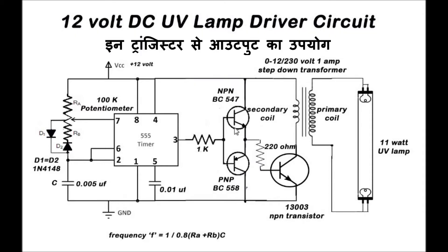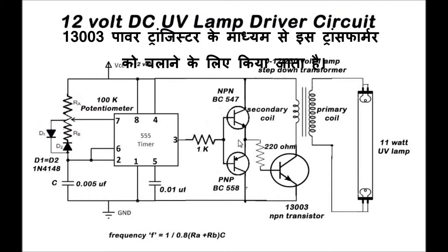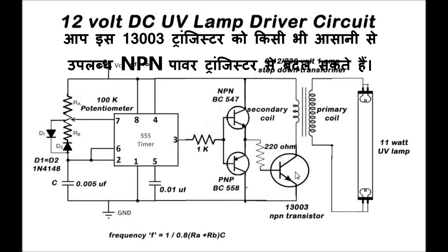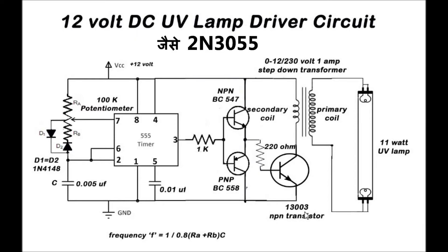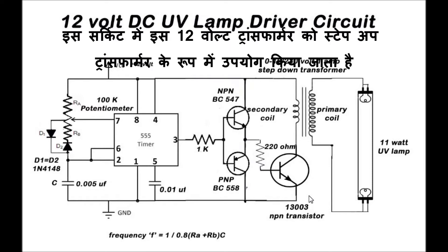The output from these transistors is used to drive this transformer via a 13003 power transistor. You can replace this 13003 transistor with any easily available NPN power transistor like 2N3055. In this circuit, this 12V transformer is used as a step-up transformer.